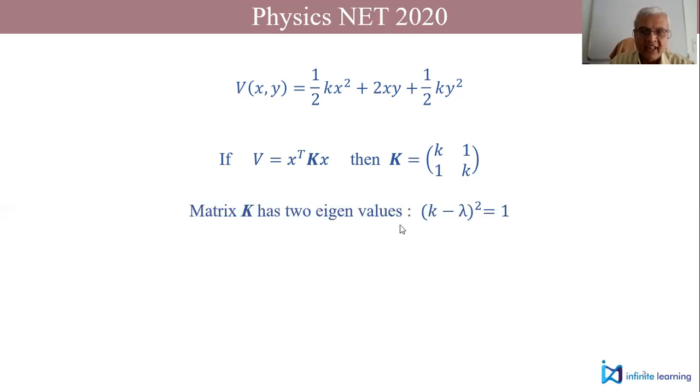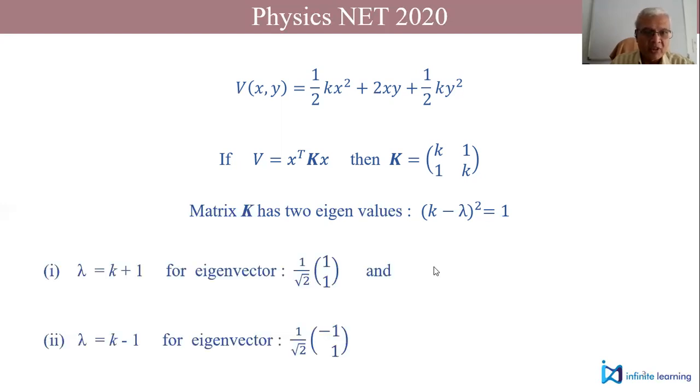So matrix K has two eigenvalues. If you write the eigenvalue equation and expand, you will have that term (k - λ) at both diagonal elements and you will get (k - λ)² equal to 1, which means your λ value is either k+1 or k-1.